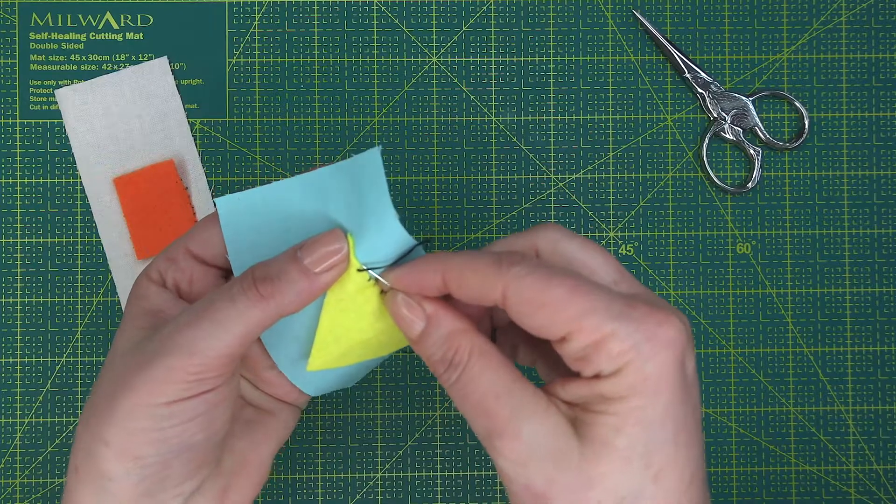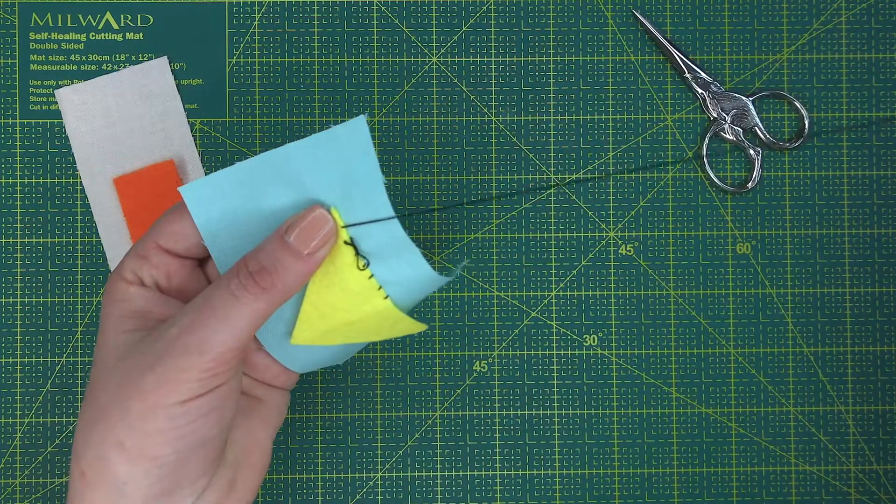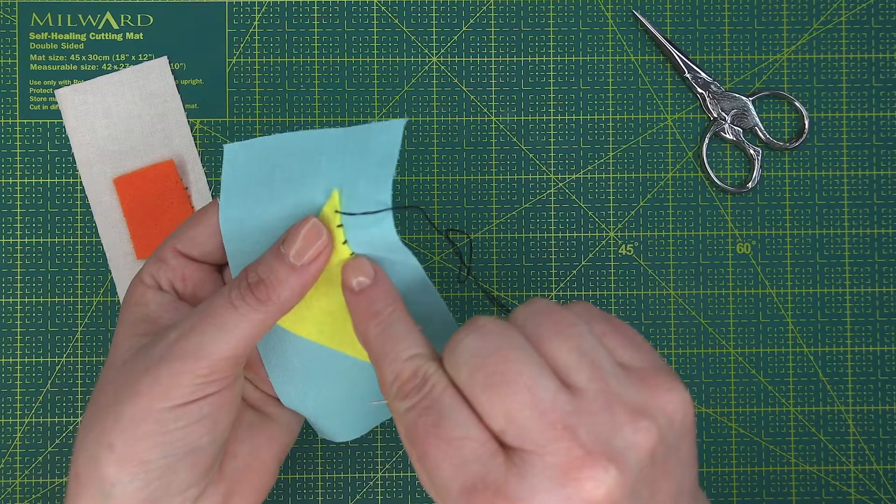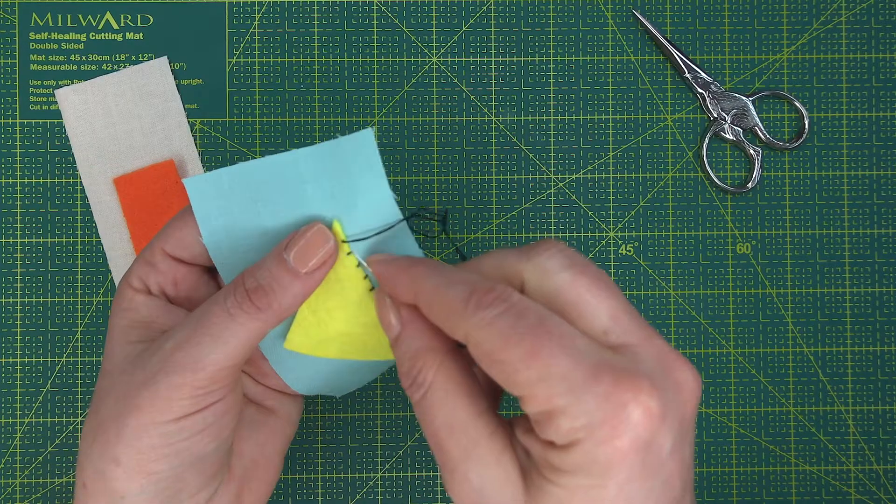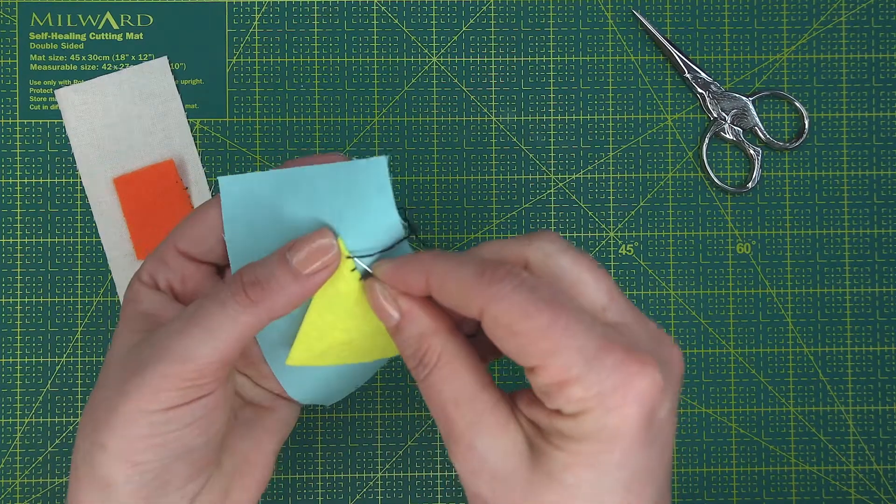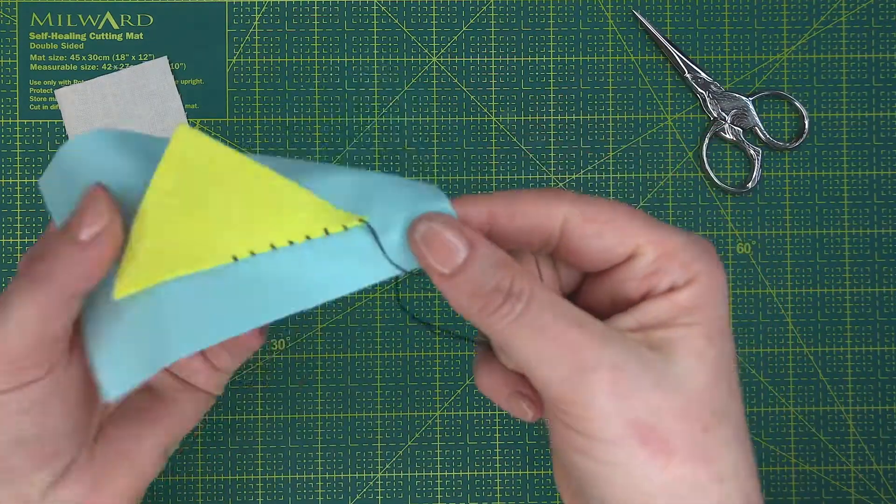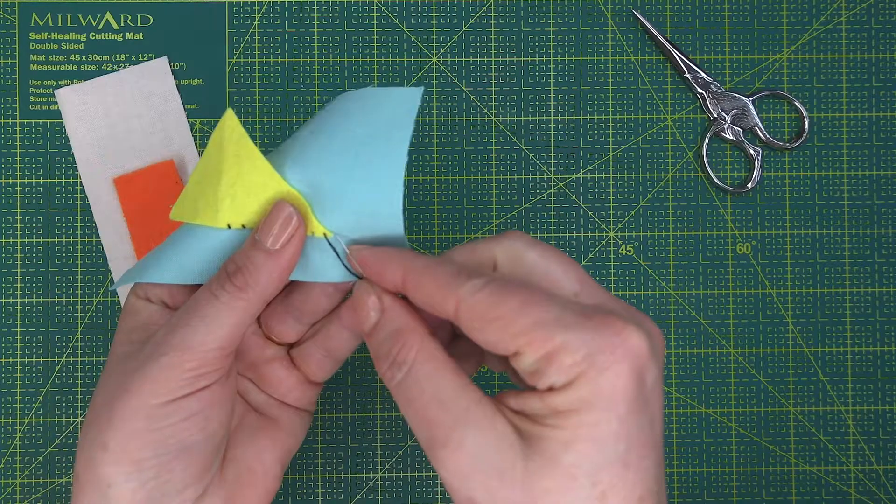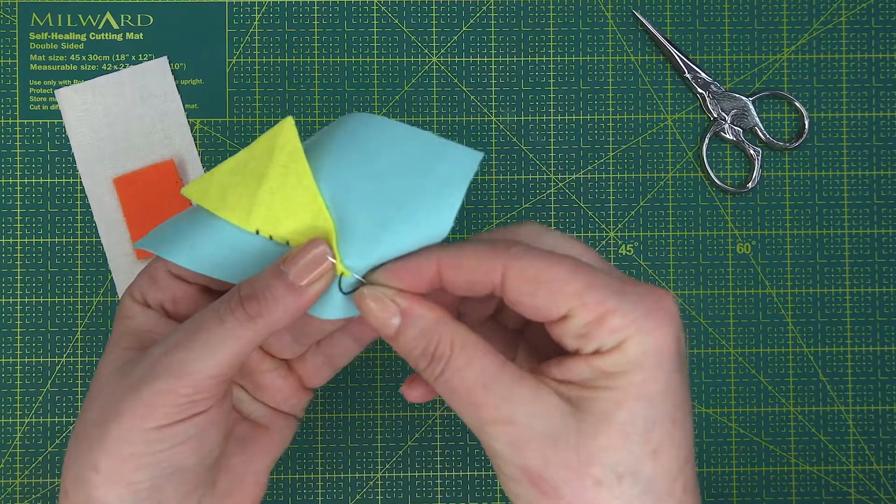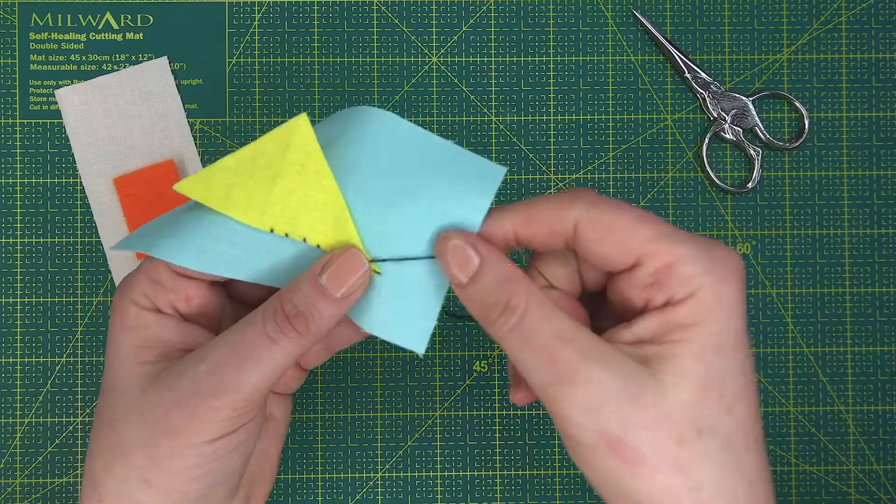You can see it's actually attaching itself. If you wanted the stitch to be more invisible, you'd have it closer together here and you'd also be using the same color thread. Working around the corner, there we go.